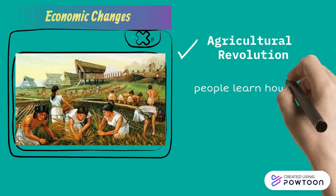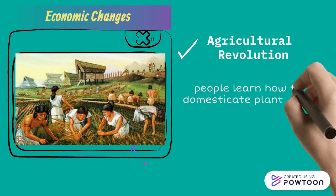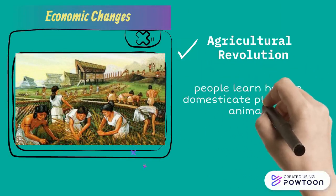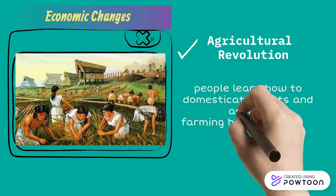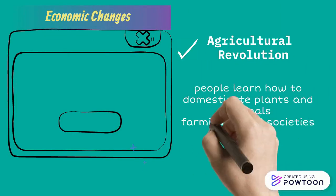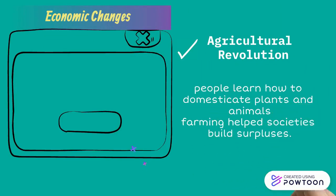One of the economic changes is the agricultural revolution. People learned how to domesticate plants and animals. Farming helps societies build surpluses.